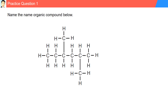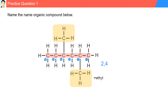Practice question. Name the organic compound below. We identify the longest chain — it has six carbons. We can number from left to right or from right to left. The branches can be located at carbon three and five, or carbon two and four. We'll use the lower numbers — carbon two and carbon four — numbering from right to left in blue. Our branches: we have a one-carbon branch known as methyl, and another one-carbon branch also known as methyl. The longest chain has six carbons, so we name it hexane. The substituent is methyl and there are two of them, so we use dimethyl, located at carbon two and carbon four. The name for the compound is 2,4-dimethylhexane.